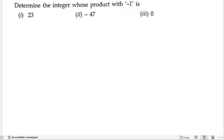Determine the integer whose product with minus 1 is - there is some integer when we multiply it with minus 1, we should get 23, minus 47, and 0.